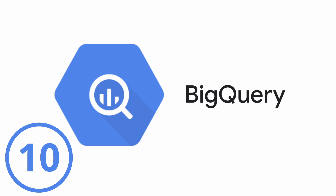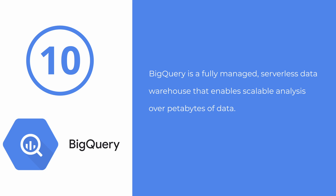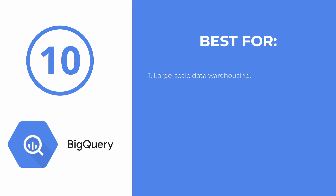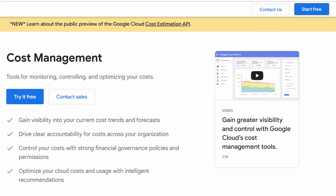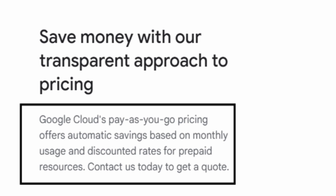Number 10 on my list is Google BigQuery. Google BigQuery is a fully-managed serverless data warehouse that enables scalable analysis over petabytes of data. It is part of the Google Cloud platform and is designed to handle large datasets and perform fast SQL queries. It is best for large-scale data warehousing, running complex SQL queries on massive datasets, and analyzing data for business intelligence. BigQuery uses an on-demand pricing model based on the amount of data processed, with a free tier for limited processing per month.